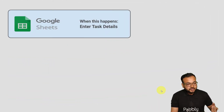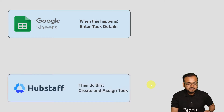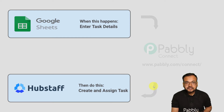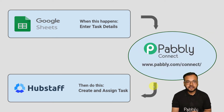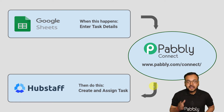The flow of this automation is going to look like this: when you enter the task details in a row in the Google Sheets application, the same task will be created and assigned in Hubstaff to a team member automatically. To make this happen, we are using Pably Connect, which is an integration and automation tool. The best part is that you will not require any coding skills or programming knowledge, so anyone can set up this automation.